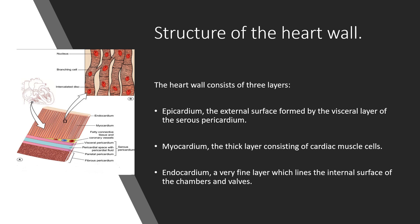Inside the pericardium is the heart wall, organized into three main layers. The outermost layer of the heart wall is the epicardium, which is also the innermost layer of the pericardium. The middle layer of the heart wall is the myocardium — the actual muscular layer of the heart, responsible for contracting and pumping blood through the body. The endocardium is the thin innermost layer of tissue that makes direct contact with the blood pumping through the heart chambers.